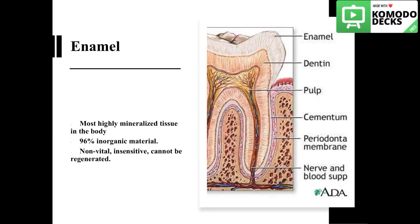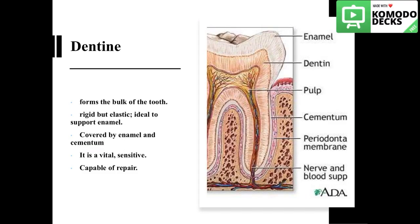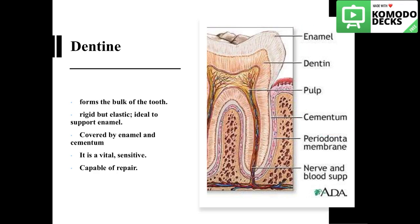The enamel is the most highly mineralized tissue in the whole body. As I mentioned, it has 96% inorganic material. It is non-vital, insensitive, and cannot be regenerated. Dentine forms the bulk of the tooth — it is a rigid but elastic tissue, making it ideal to support enamel. It is covered by enamel in the crown area and by cementum in the root area. It is vital, sensitive, and repairable.